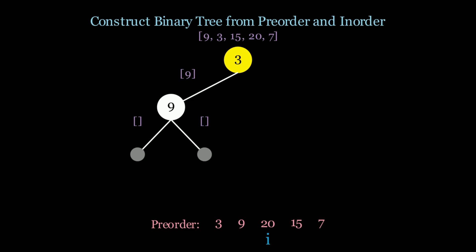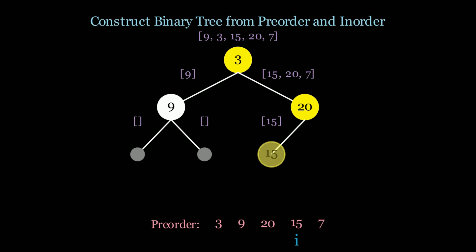Now we're done with node 9, so we recursively go back to node 3's call stack and calculate the right subtree. On the right-hand side we know the values are 15, 20, and 7. The pre-order traversal tells us the current node to create is 20. We create node 20 and move i to the next node. For node 20's left subtree, we pass all elements to the left of 20 in the in-order list, which is just 15. The pre-order confirms the next node to create is indeed 15, so we create node 15 and move i to 7.